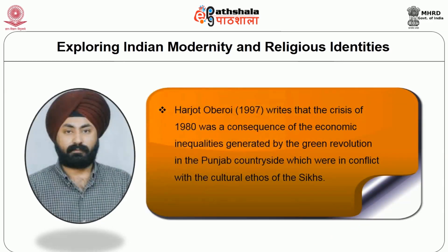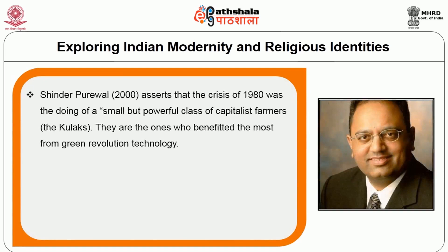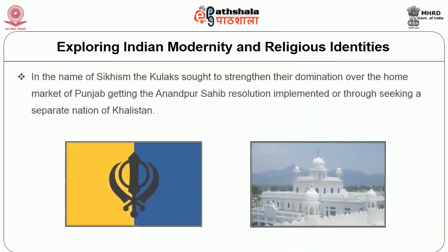Harjot Oberoi writes that the crisis of the 1980s was a consequence of the economic inequalities generated by the green revolution in the Punjab countryside, which were in conflict with the cultural ethos of the Sikhs. The rising tide of inequalities in the Punjab did not easily blend with the dominant ethos of Sikh religious tradition, which demanded a just moral economy based on equitable distribution of wealth and resources. Shinder Purival argues that the crisis of 1980 was the doing of a small but powerful class of capitalist farmers, or the Kulaks, who benefited most from green revolution technology. In their struggle against the commercial and industrial bourgeoisie, the Sikh Kulaks invoked the ideology of Sikhism and their religious identity to build a common bond with the marginal and landless Sikh peasantry, who had been further marginalized by the green revolution. In the name of Sikhism, the Kulaks sought to strengthen the domination of a Punjabi homeland, getting the Anandpur Sahib resolution implemented and seeking a separate nation of Khalistan.